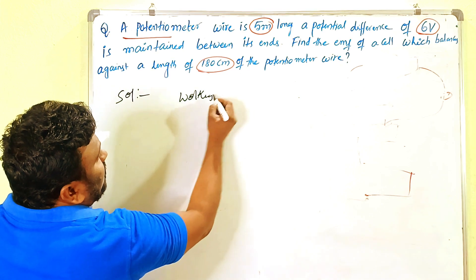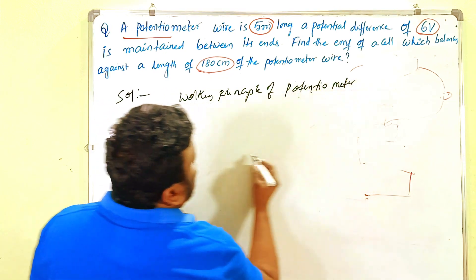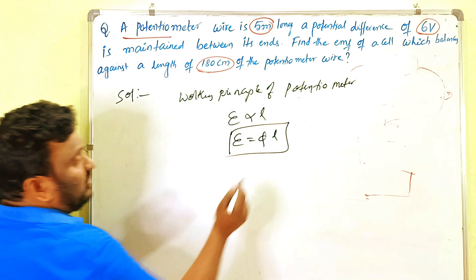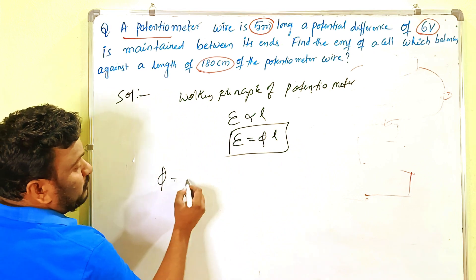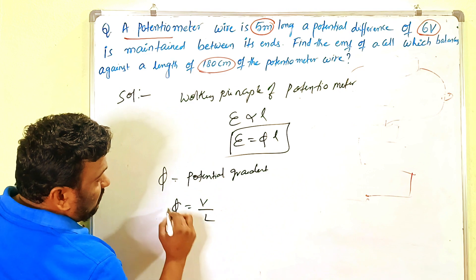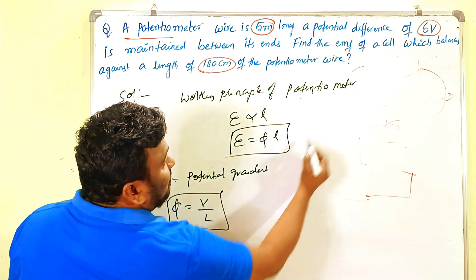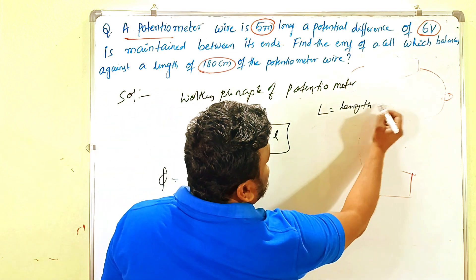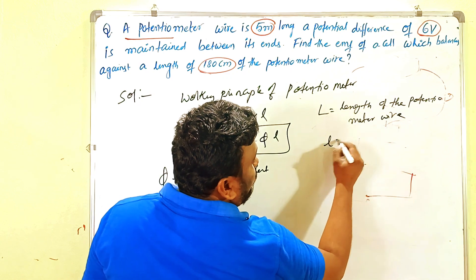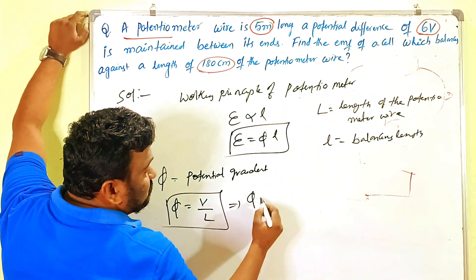Working principle of the potentiometer: EMF epsilon is proportional to L, or epsilon equals phi into L, where L is the length of the wire and phi is the potential gradient. Potential gradient phi is equal to V by capital L, where V is the potential of the potentiometer wire and small l is the balancing length.